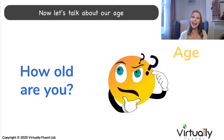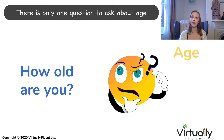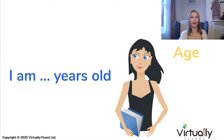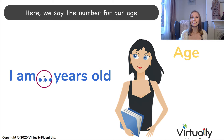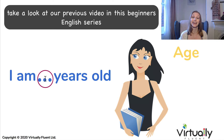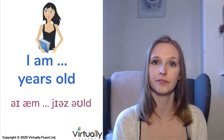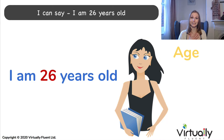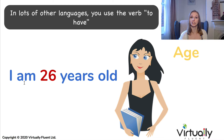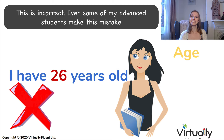Now let's talk about our age. There is only one question to ask about age: 'How old are you?' The response is 'I am [number] years old.' I can say: 'I am 26 years old.' Be careful with this question because in English we use the verb 'to be.' In lots of other languages you use the verb 'to have' — this is incorrect. Even some of my advanced students make this mistake. The correct sentence is 'I am 26 years old.'